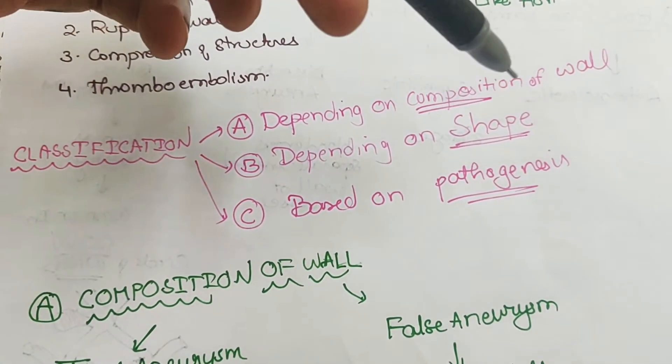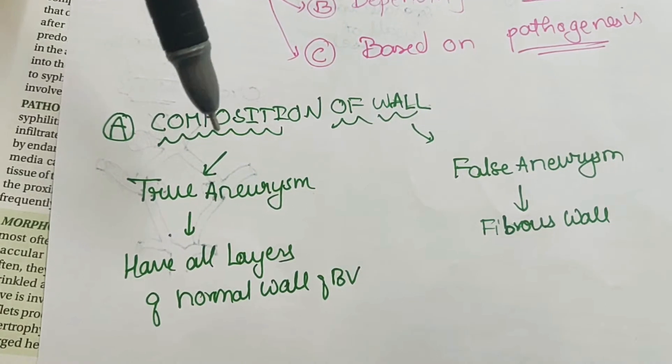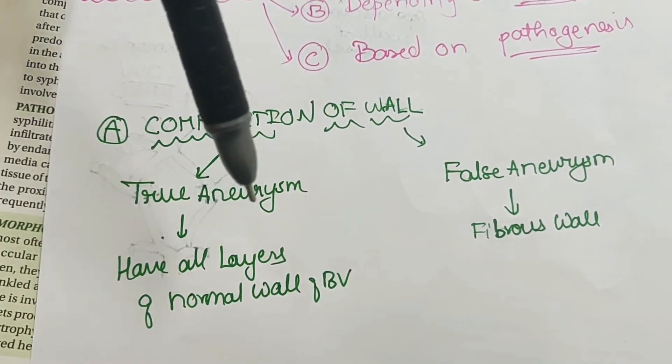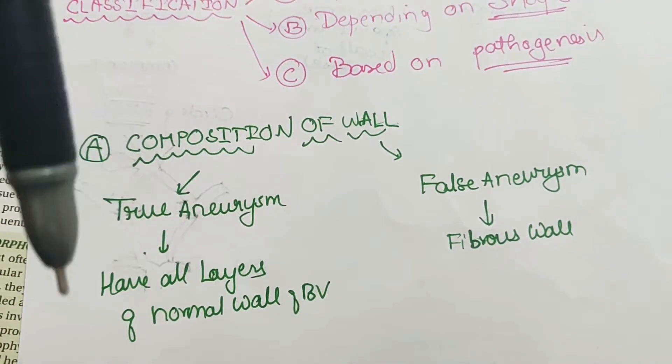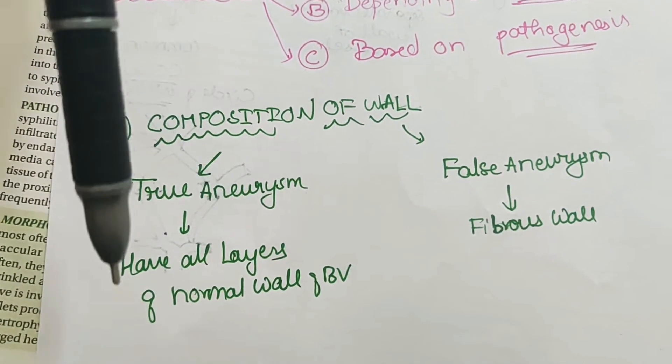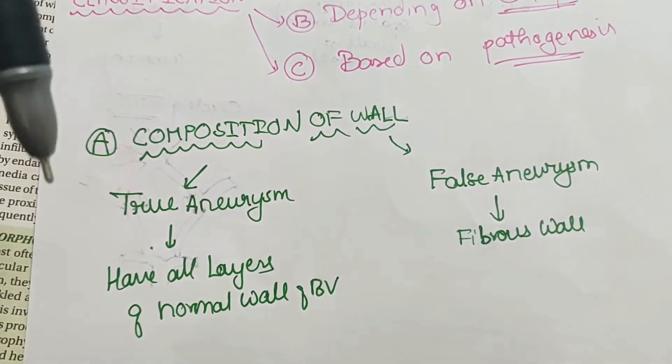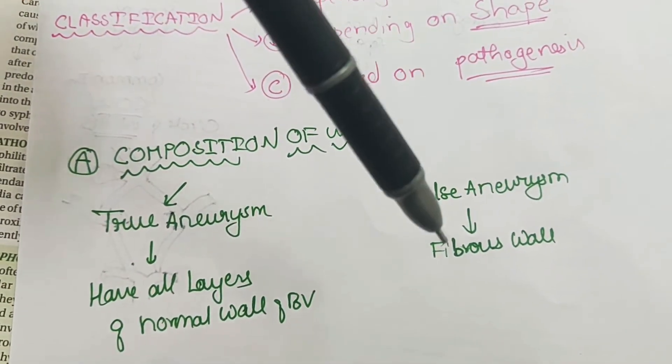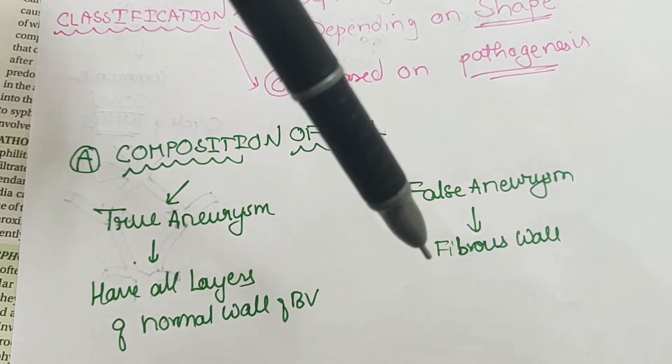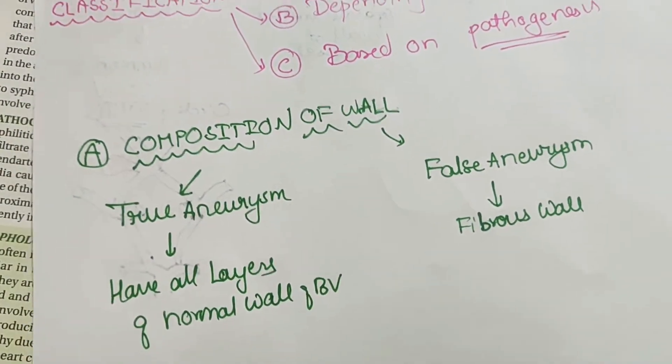First, depending on the composition of the wall, it can be divided into true aneurysms and false aneurysms. True aneurysms have all the layers of the normal blood vessel in the wall of the aneurysm. All layers are present, but in false aneurysm there is a fibrous change in the wall.